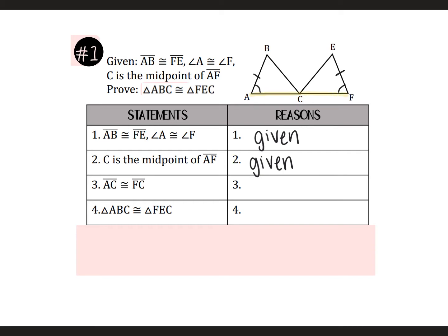So here's AF right here. It is split into two parts by C. So you have AC as the first half and CF as the second half. So they put AC is congruent to FC, and that's the definition of midpoint.